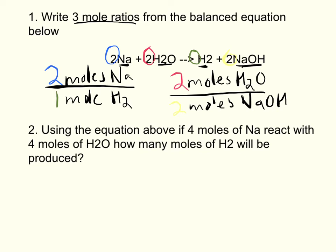Number two says, using the equation above, if four moles of Na react with four moles of H2O, how many moles of H2 will be produced? We have four moles of Na and four moles of H2O. You might be thinking, there's two givens, I'm not really sure where to start.